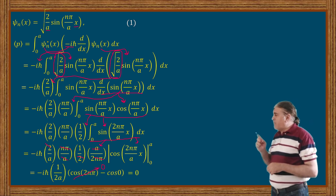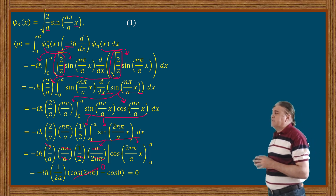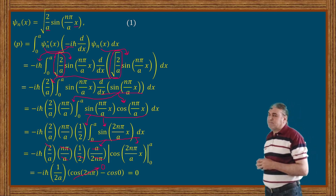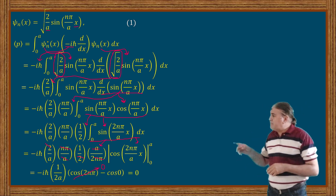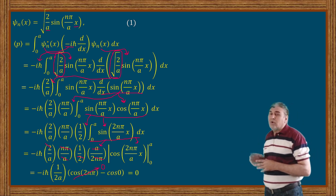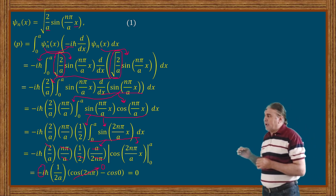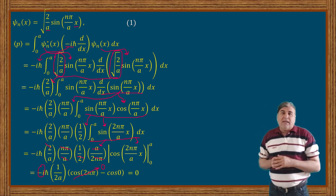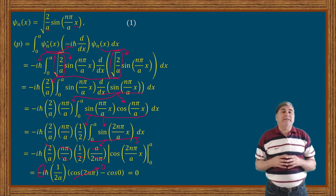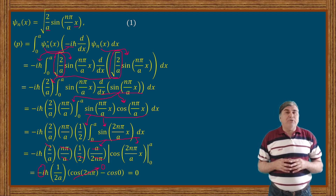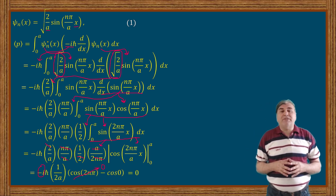Number one: why should the expectation value of momentum always be zero? And number two: how do we understand this zero value physically? For the first question — if the term inside the last brackets were not zero, the expectation value of momentum would have been imaginary due to the presence of iota in the result. Remember, an imaginary value of a measurable quantity is not physically acceptable because to be measurable, a physical quantity must be real. Due to this reason, the expectation value of momentum vanishes.